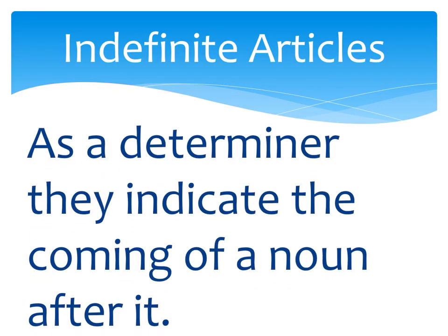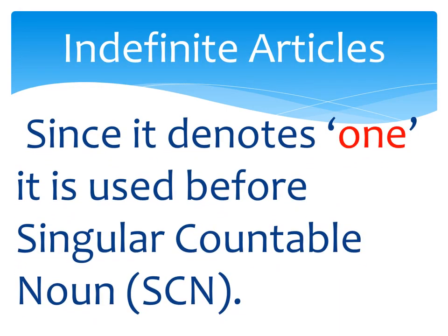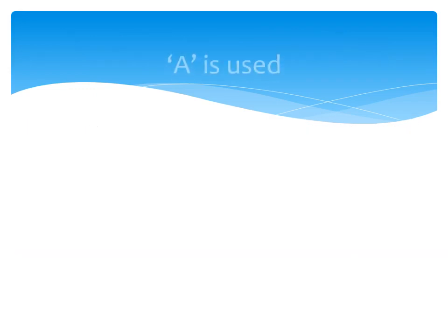As a determiner, A and An indicate the coming of a noun after them — articles are used just before a noun. Both A and An denote one, and both are used before a singular countable noun. Now we are going to revise the uses of A.